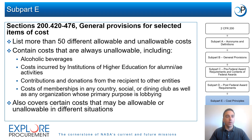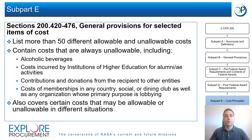Subpart E also provides general provisions for selected items of cost — essentially a list of more than 50 different allowable and unallowable costs. Costs that are always unallowable include alcoholic beverages, costs incurred by institutions of higher education for alumni activities, contributions and donations from the recipient to other entities, and costs of memberships in country, social, or dining clubs, as well as organizations whose primary purpose is lobbying. Some costs are allowable in certain instances, such as entertainment costs, which are generally unallowable but may be charged to an award if they have a programmatic purpose and are approved by the awarding agency.